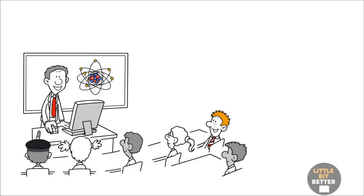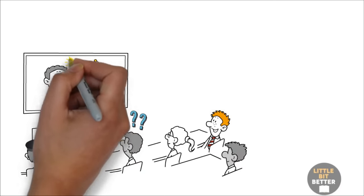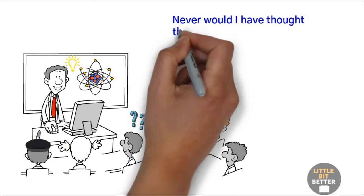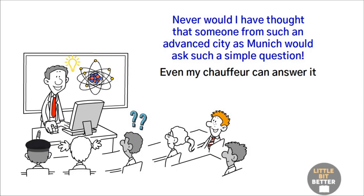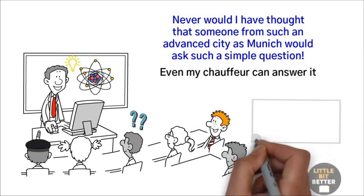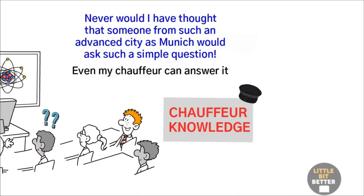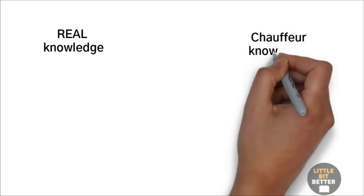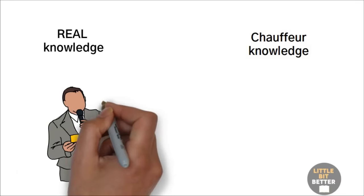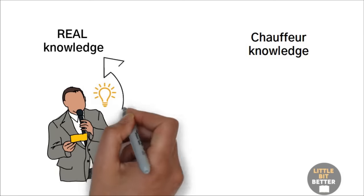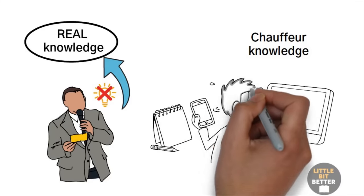But at the end of the lecture, a physics professor asked him a complex question. Unable to answer, the driver found an interesting way out. He said, Never would I have thought that someone from such an advanced city as Munich would ask such a simple question. Even my chauffeur can answer it. And asked Professor Planck to answer the question. This amusing story helps us understand the chauffeur knowledge. There is real knowledge, and there is chauffeur knowledge. That is, knowledge from people who don't know much but have learned to put on a show. Maybe they have a great voice, are very eloquent, and are nice to look at. That doesn't mean they have any idea of what they're talking about. Many journalists and politicians fall into this category.